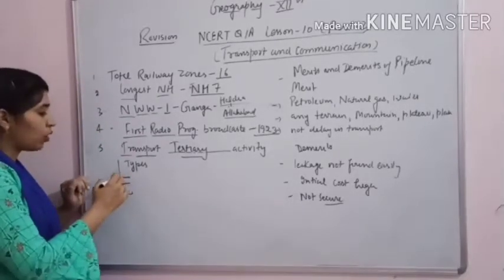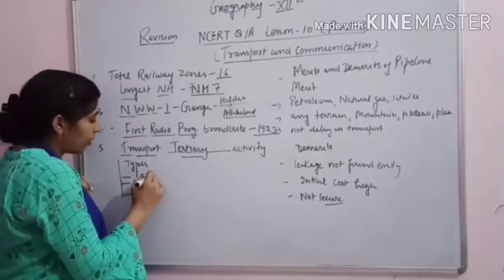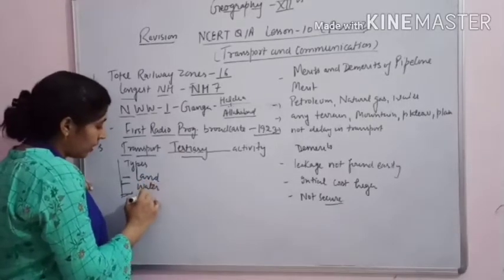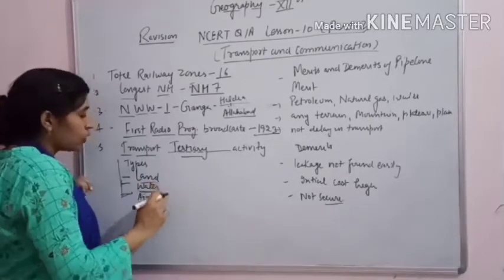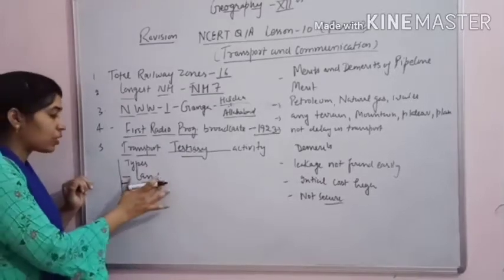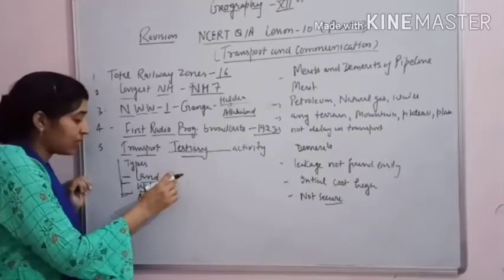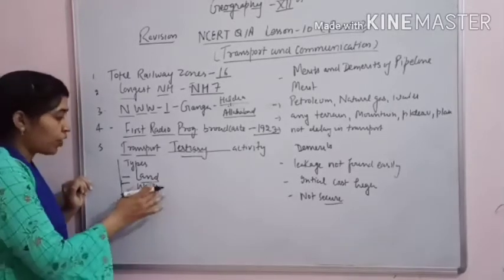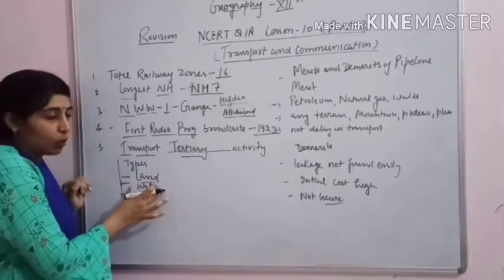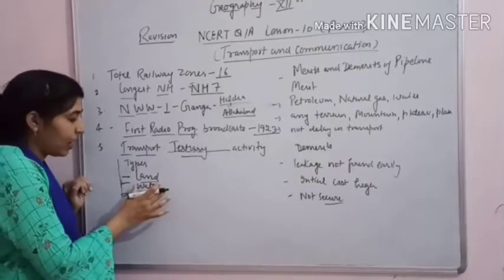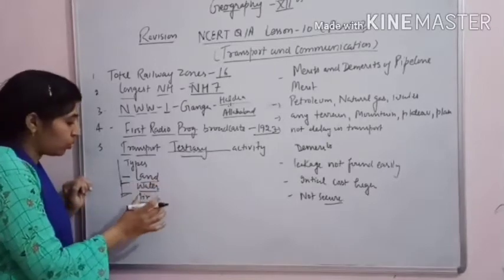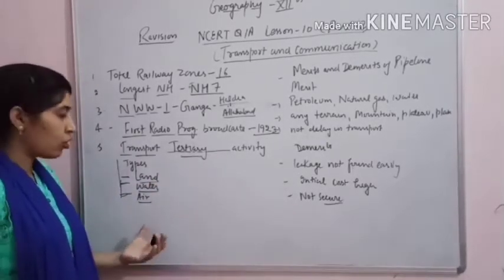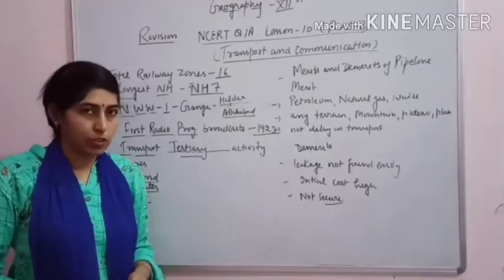The next question is: what are the types of transport? There are three main types — land transport, water transport, and air transport. Under land transport we have roadways and railways. Under water transport we have domestic and ocean routes. Under air transport we have domestic airways and international airways.